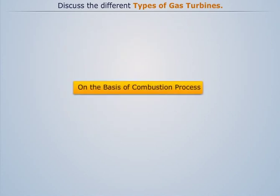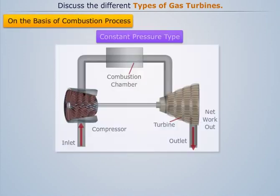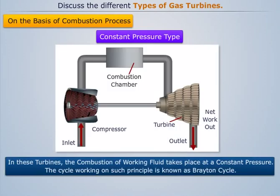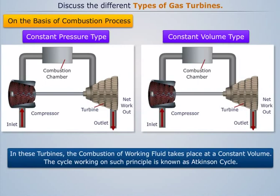On the basis of combustion process, gas turbines can be divided into two types. Constant pressure type: in these turbines the combustion of working fluid takes place at a constant pressure; the cycle working on such principle is known as the Brayton cycle. Constant volume type: in these turbines the combustion of working fluid takes place at a constant volume; the cycle working on such principle is known as the Atkinson cycle.